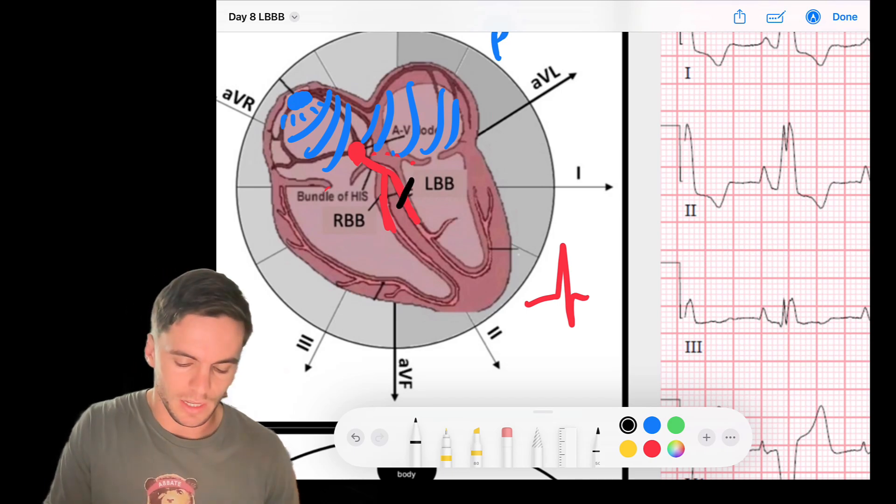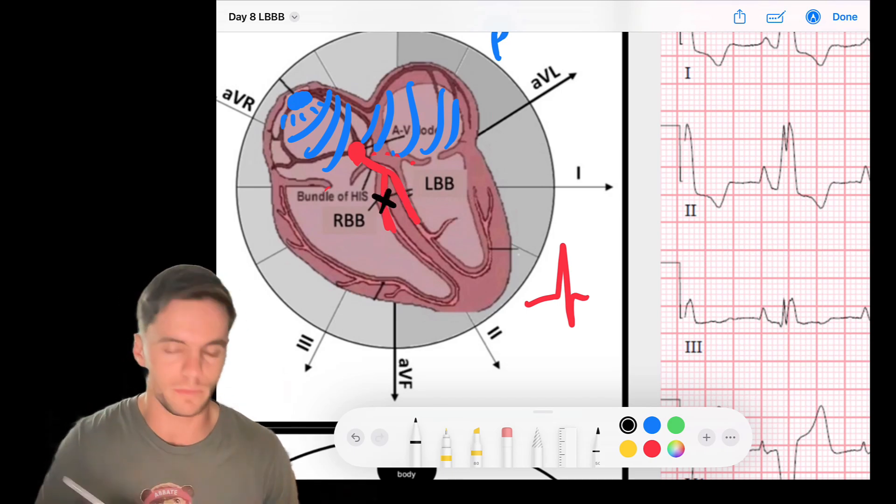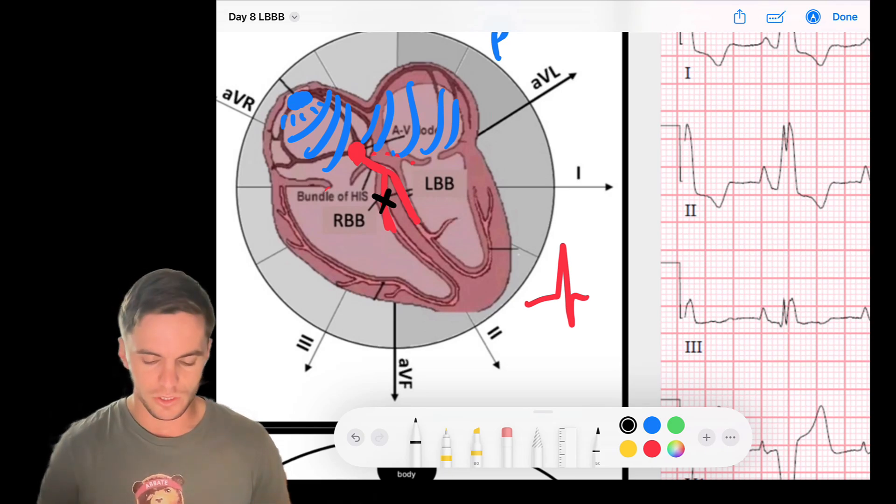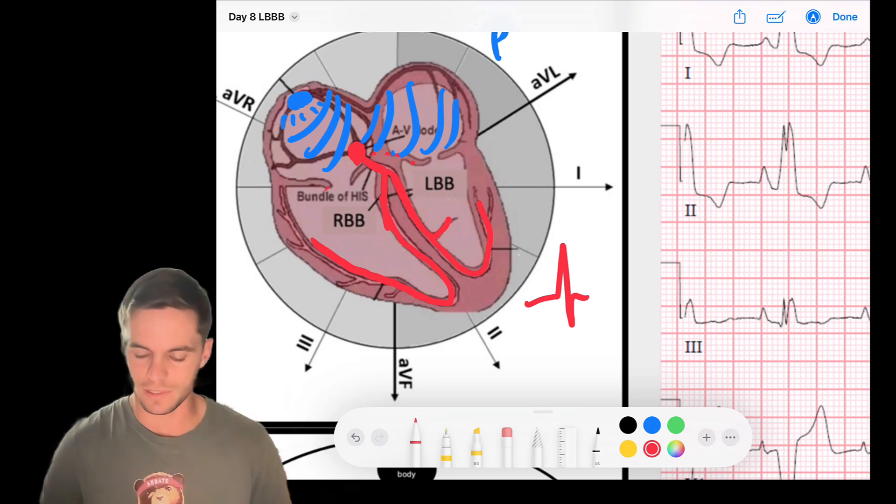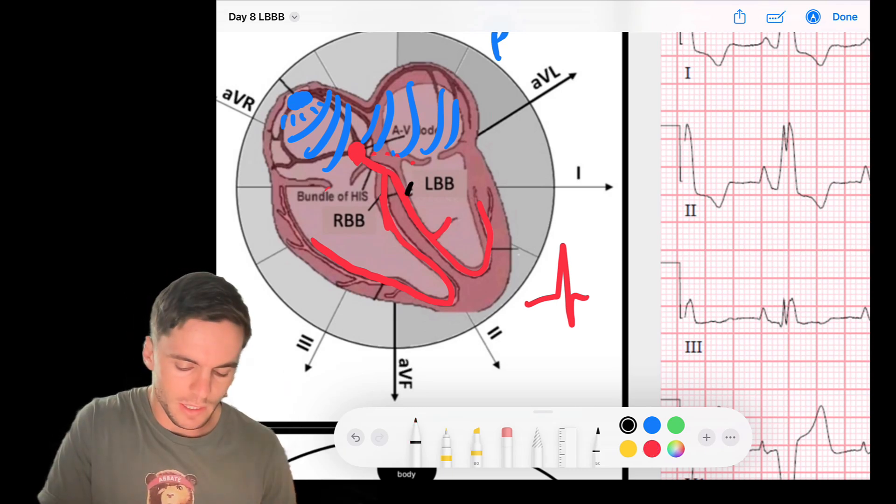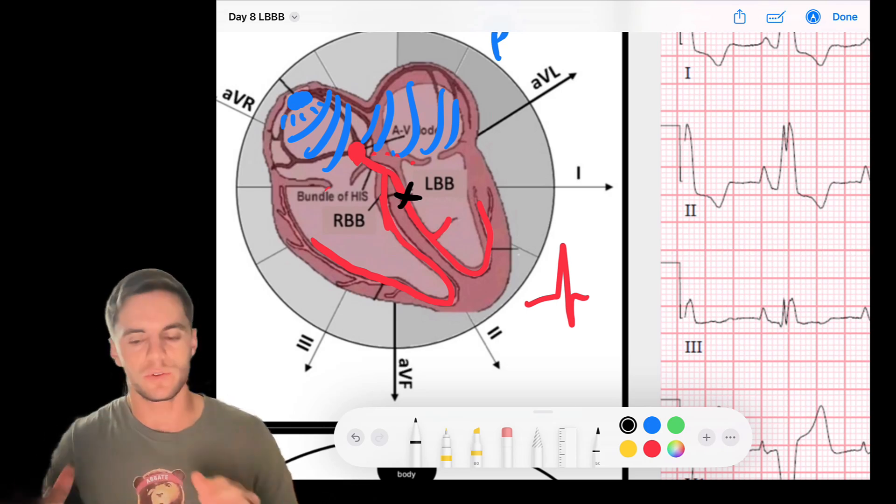You can have a left bundle branch block, you can have a right bundle branch block. So as you can imagine what would happen in, say, a left bundle branch block. Here's our left bundle, here's the right bundle. Imagine what happens when we block the left bundle. What that means is that conducting fiber, the left bundle, is diseased and the signal can't get through.